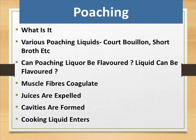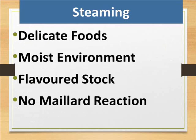Poaching — what is it? Various poaching liquids are used, such as court bouillon and short broth. The poaching liquor can be flavored. During poaching, muscle fibers coagulate, juices are expelled, cavities are formed, and cooking liquid enters the food.